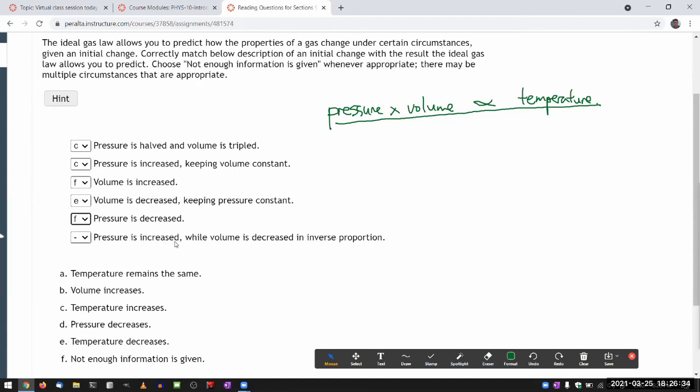Pressure is increased. Well, volume is decreased in inverse proportion. Oh, I think what it means is when you multiply them together, that the product is not changing. So temperature remains the same. Okay.